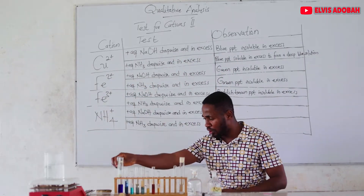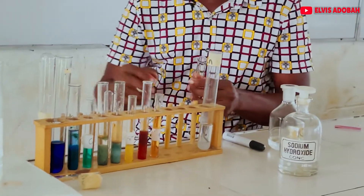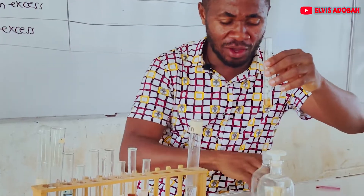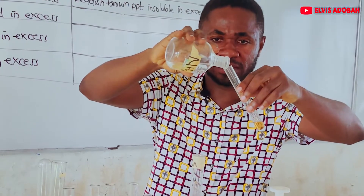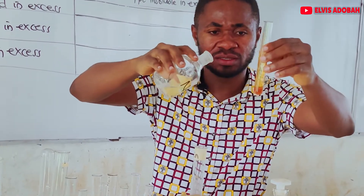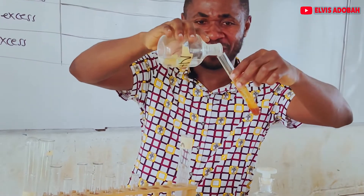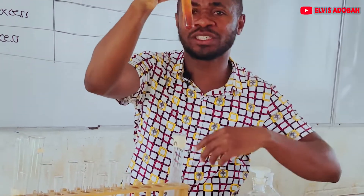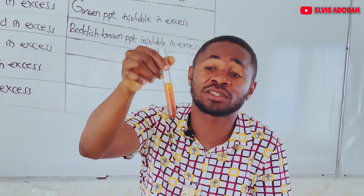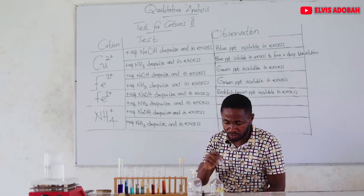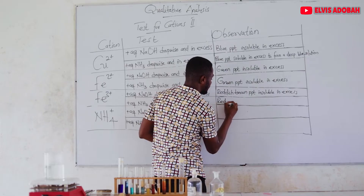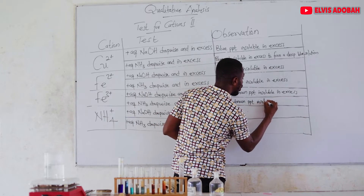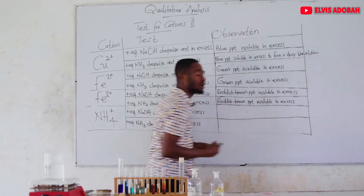Then I take another portion of my Fe3+, but this time I will add aqueous ammonia dropwise, then in excess. I am still forming my reddish brown precipitate. Adding in excess — my reddish brown precipitate is not dissolving even after shaking. So it is insoluble in excess aqueous ammonia as well.